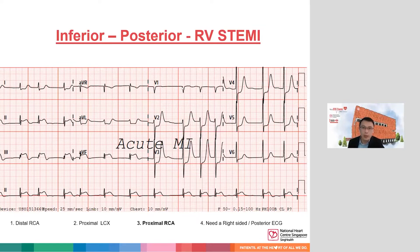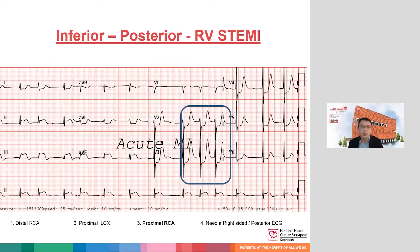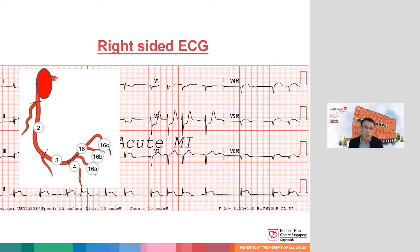Moving to lead 1, you'll notice it is isoelectric, or there may even be a slight ST elevation in V1. This is suggestive — even without a right-sided ECG — that this patient likely has a right ventricular ST elevation MI. Looking at leads 2 and 3, the ST elevation in lead 3 is higher than in lead 2. I think of lead 3 as looking closer to the right side, and based on all these features the likely occlusion is in the proximal RCA. A right-sided ECG confirms the RV infarct.